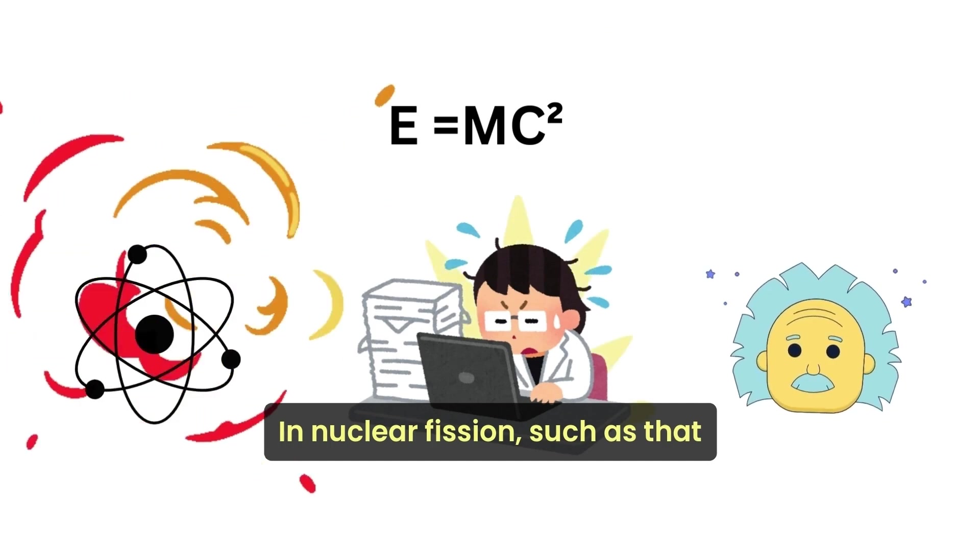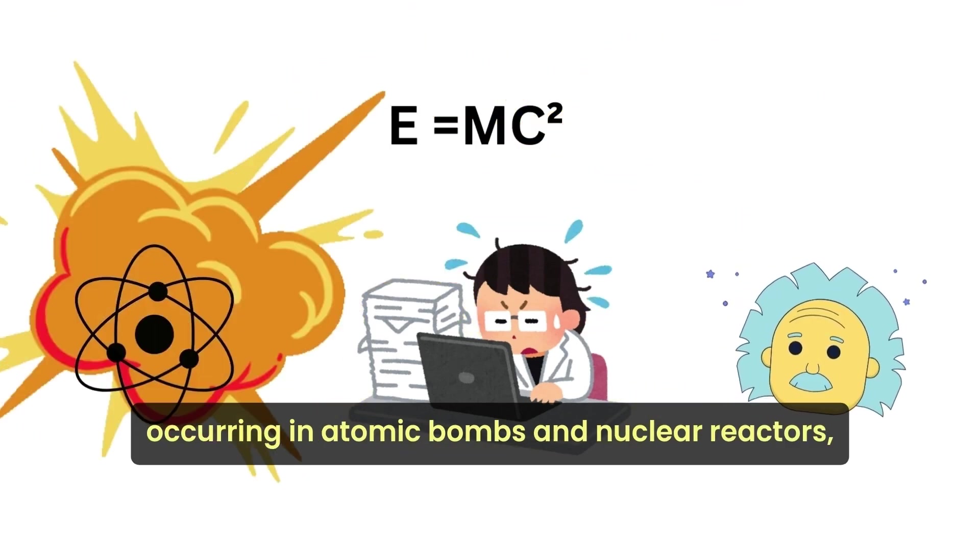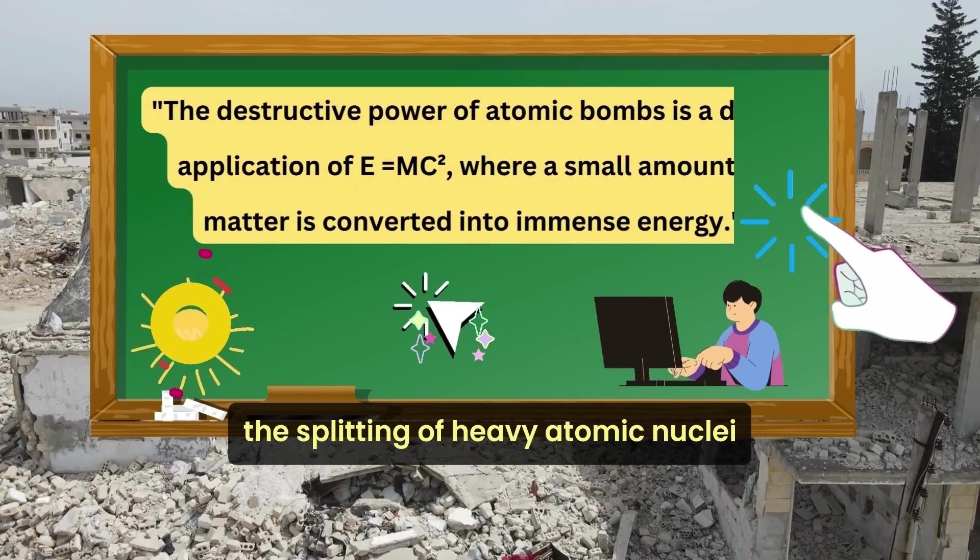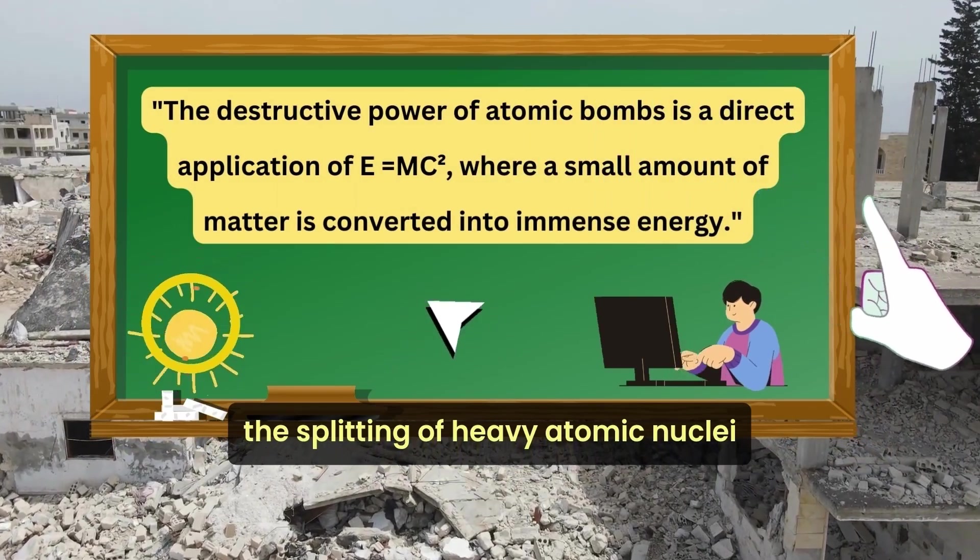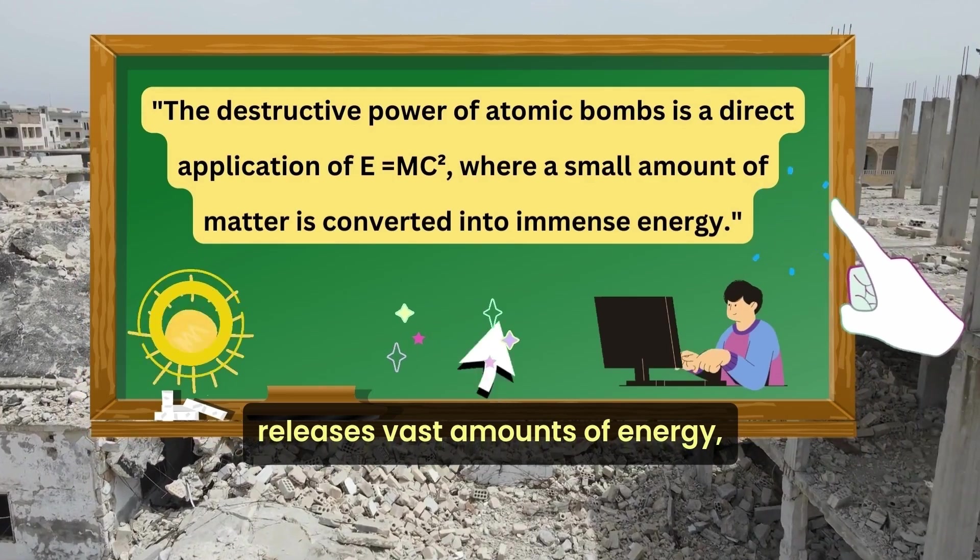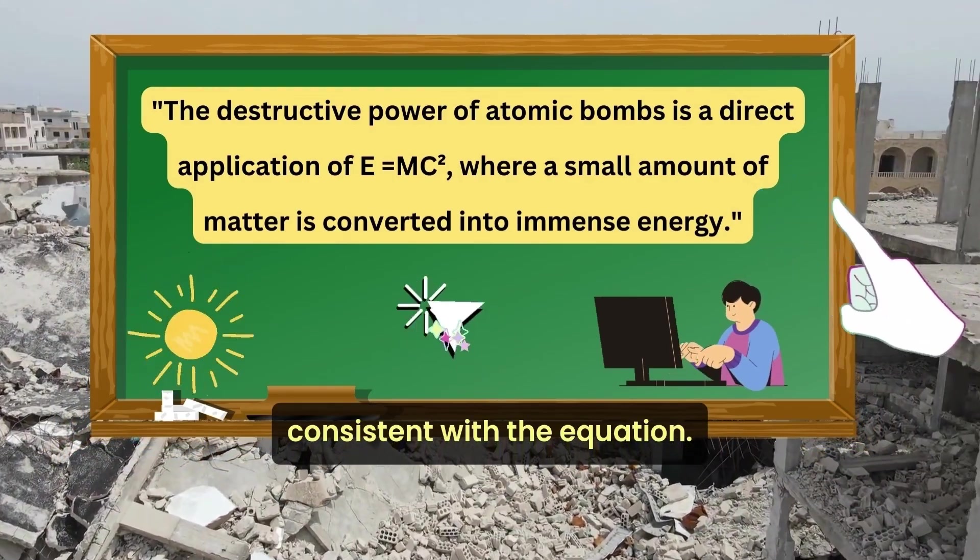In nuclear fission, such as that occurring in atomic bombs and nuclear reactors, the splitting of heavy atomic nuclei releases vast amounts of energy, consistent with the equation.